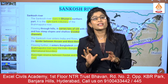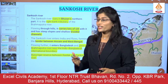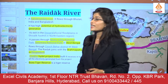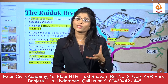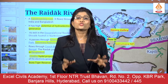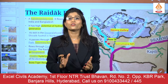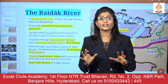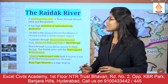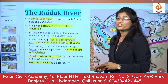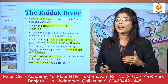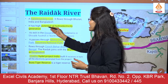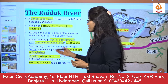The Sankosh River also supplies water to the Buksa Tiger Reserve. Now let's understand the Raidak River, because Buksa Tiger Reserve also receives water supply through the Raidak River. The Raidak River is very important as many protected areas in West Bengal are situated on its banks. The Raidak is also a transboundary river — it originates in Bhutan, flows into India, and finally merges with the Brahmaputra in Bangladesh.